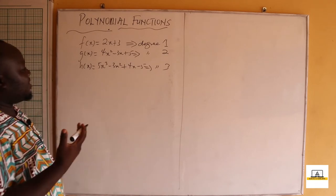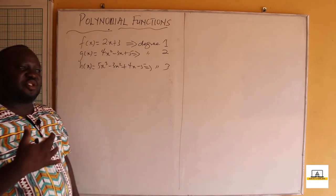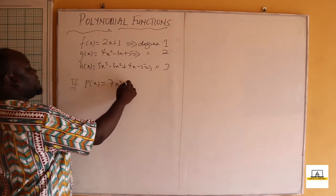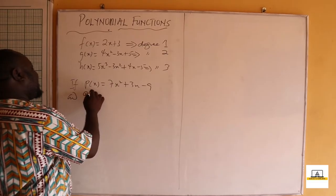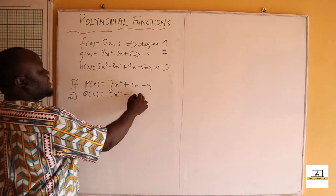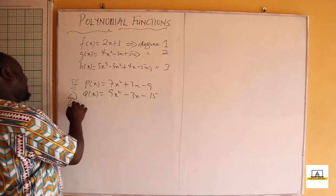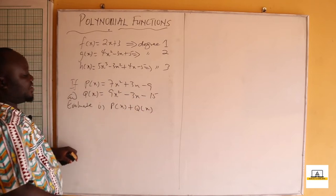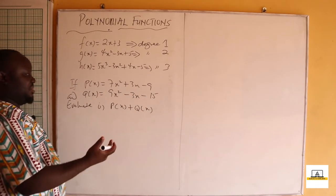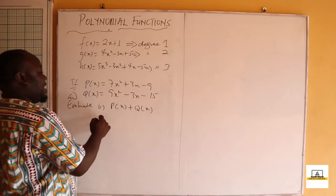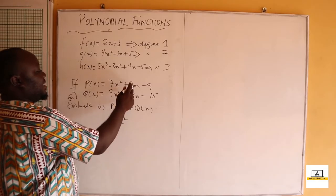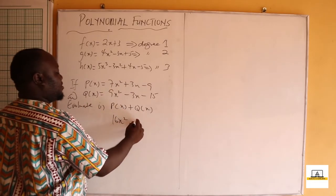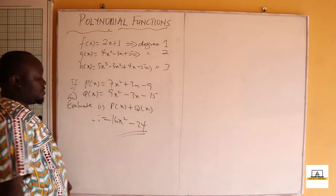We can add polynomials, subtract polynomials, and so on. If p(x) = 7x² + 3x - 9 and q(x) = 9x² - 3x - 15, and I ask you to evaluate p(x) + q(x), you add like terms: 7 + 9 = 16x², then 3 + (-3) = 0, and -9 + (-15) = -24. So p(x) + q(x) = 16x² - 24.